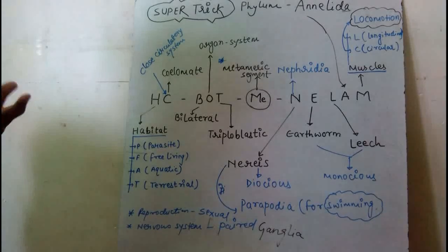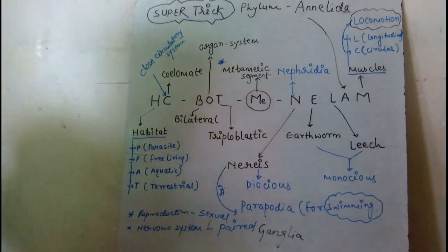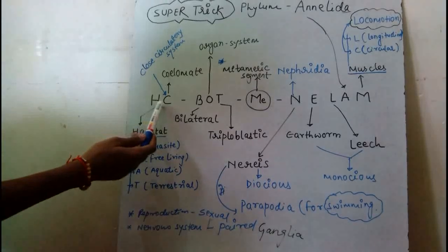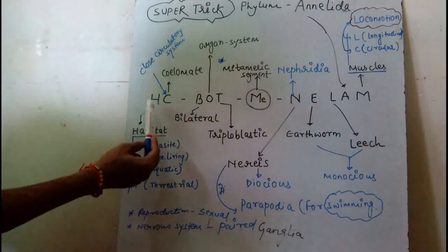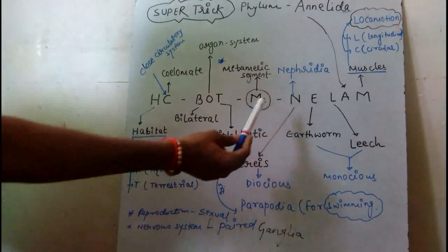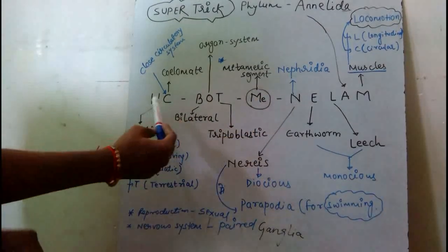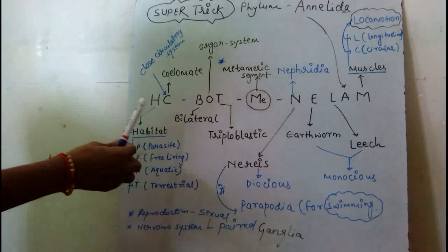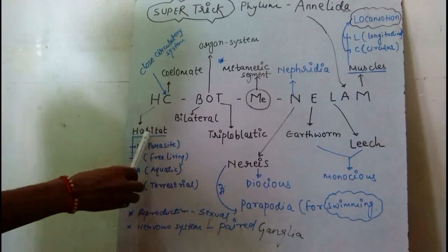We have done this with a mnemonic file. This is a high-class mnemonic: HC BOAT MANILAM. We can decode it and see what it means — this covers the features of Annelida.